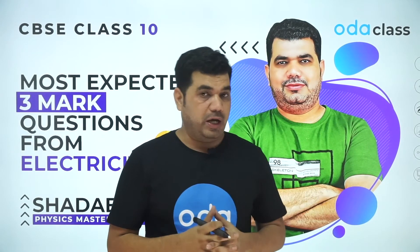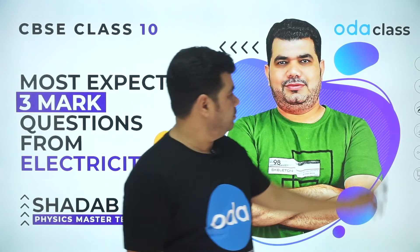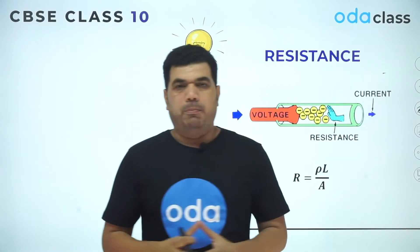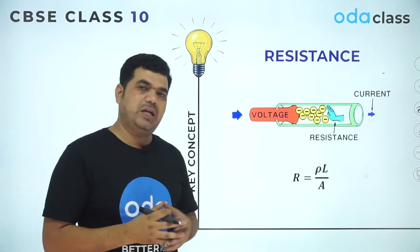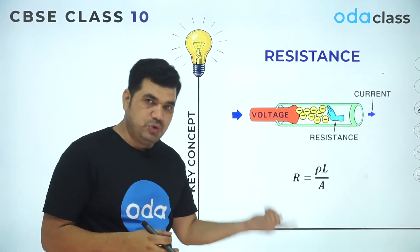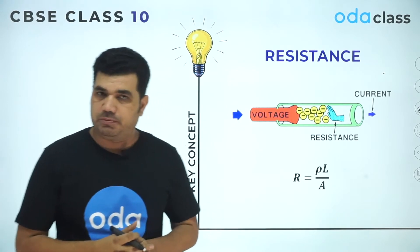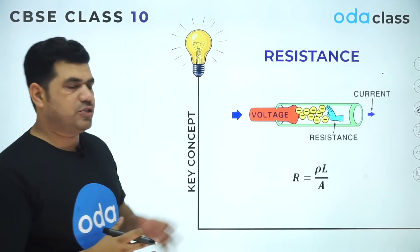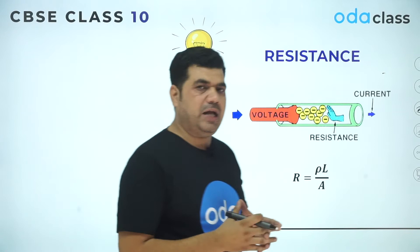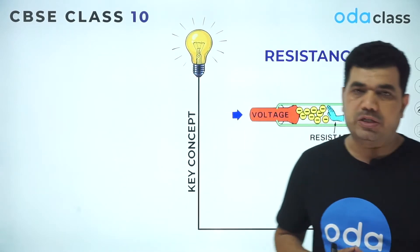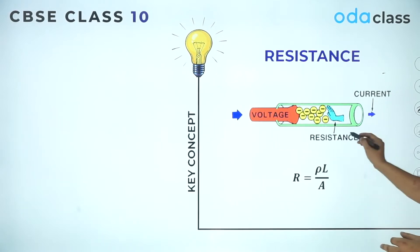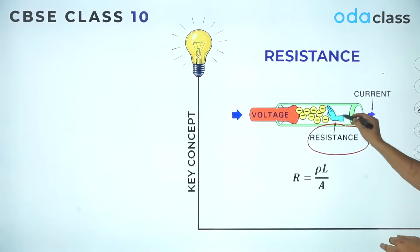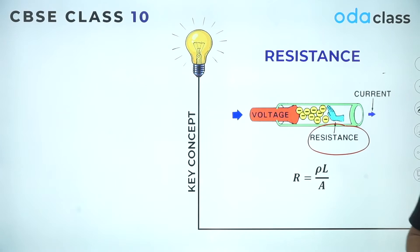Before starting the questions, I'd like to introduce some very important concepts that I will use. The topic is resistance. Resistance is something in electricity which always opposes the flow of current. Voltage is just pushing the current, and resistance is opposing the flow of that current.